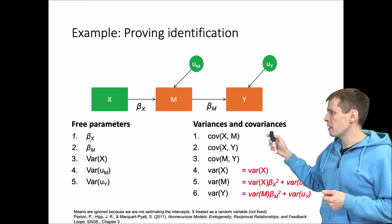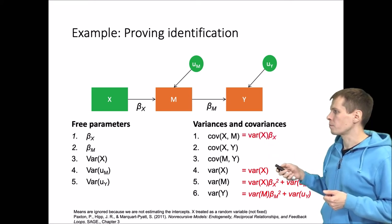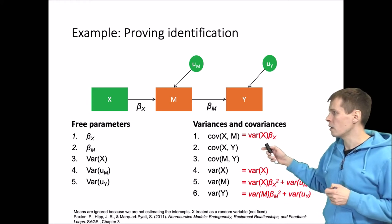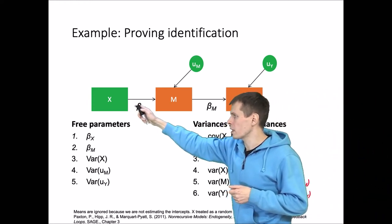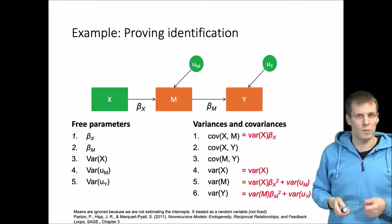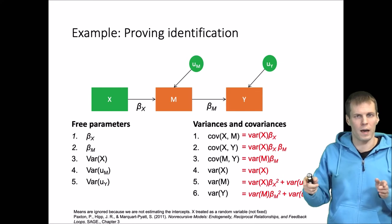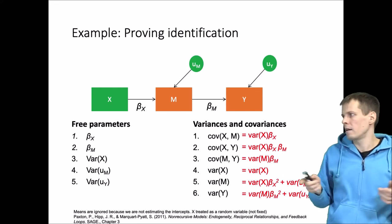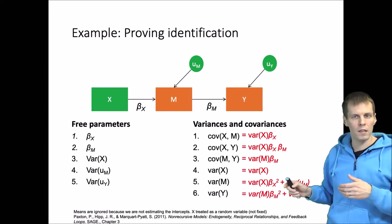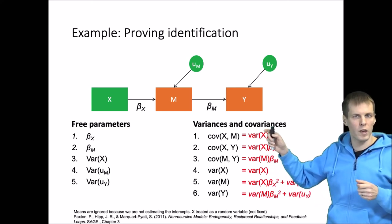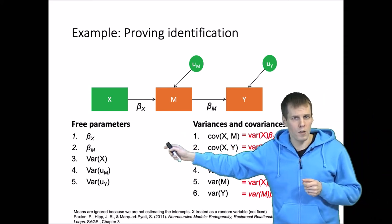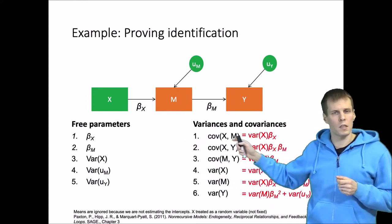The covariance between X and M is simply the variance of X times beta_X. The covariance between X and Y is the variance of X multiplied by beta_X and then by beta_M — so we multiply the two paths and the original variance. The covariance between M and Y is calculated the same way. So now we have this set of equations based on tracing rules, and then we start to solve for these unknown parameters.